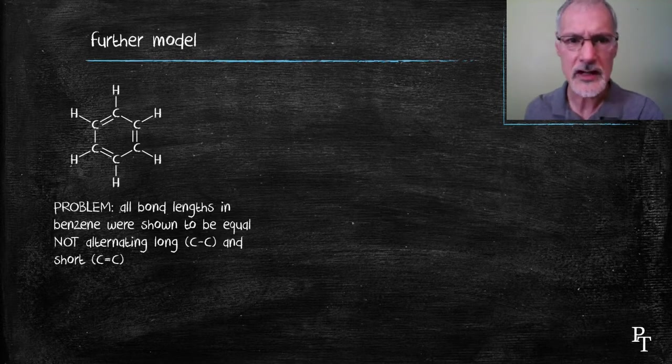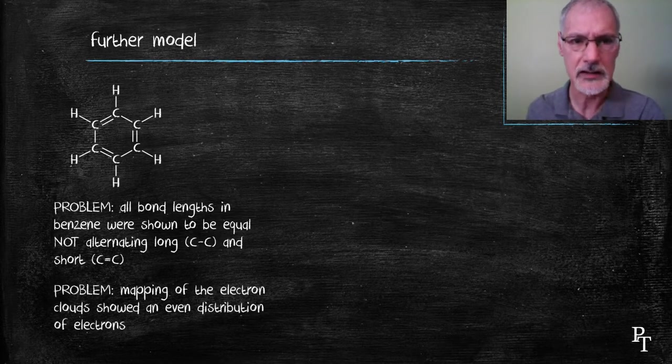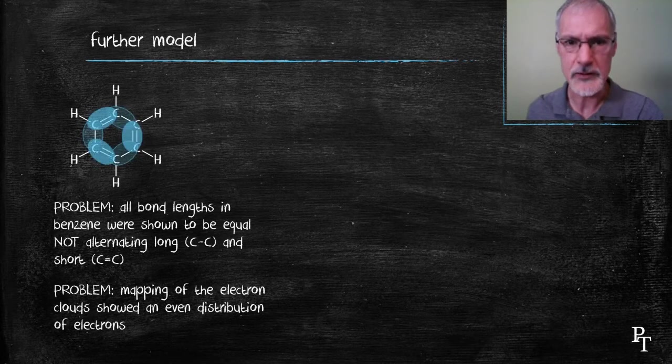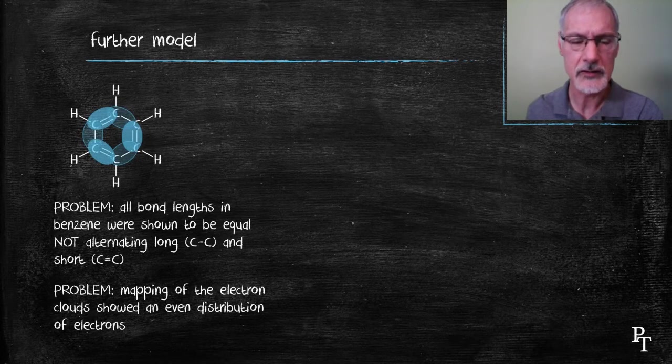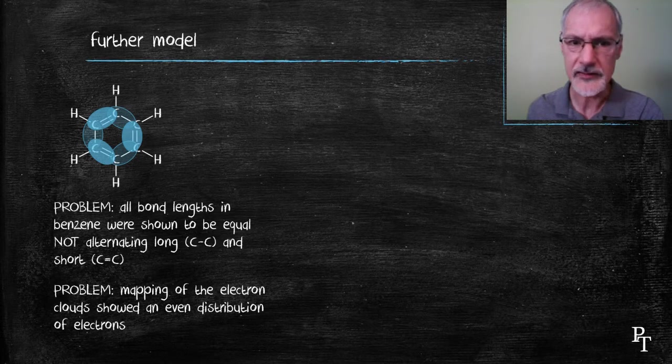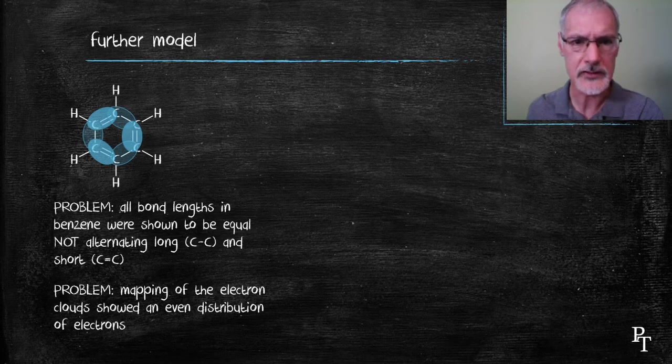Also mapping of where the electrons are, we would expect in this model to have regions of high density where there's a lot of double bonds followed by low density where there's only single bonds. But again, that doesn't happen. We find an even distribution of the electrons.